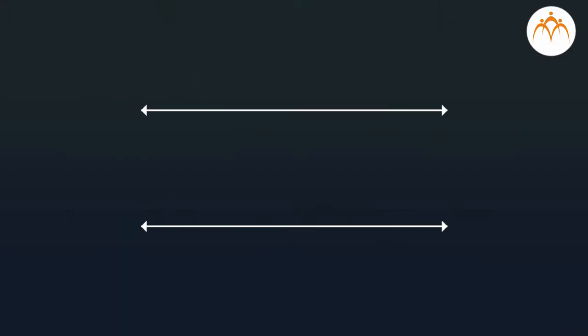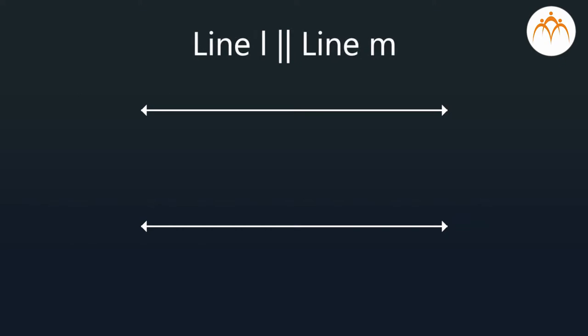You already know that two lines are said to be parallel when they lie in the same plane and the distance between them is the same, even if these lines are extended in both the directions.